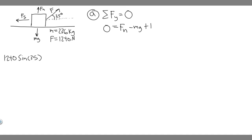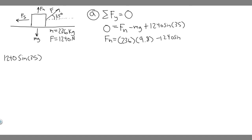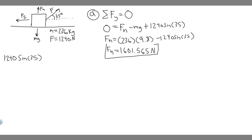Since the y component of the horse's force is going upwards, we label it positive: plus 1240 times the sine of 35. We're solving for F sub N, so we add mg to both sides and subtract the sine term. So F sub N equals 236 times 9.8 minus 1240 times the sine of 35. Plugging this into the calculator gives F sub N equal to approximately 1601.565 newtons. You can round however you want — this is your answer to Part A.